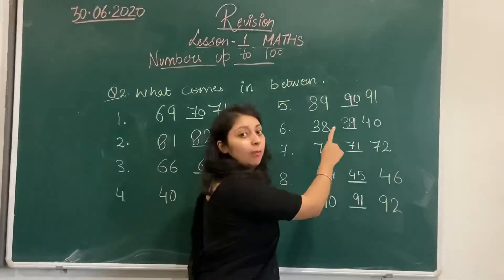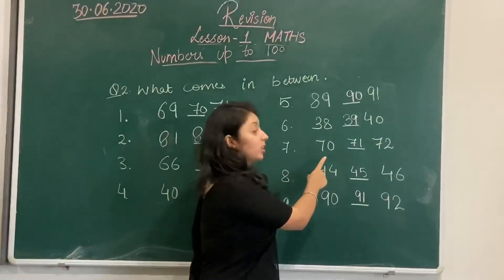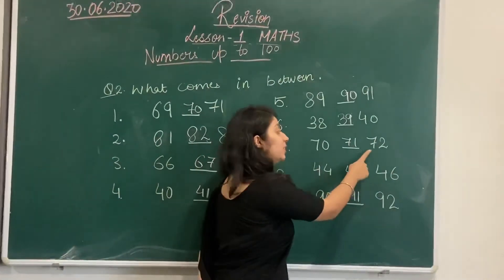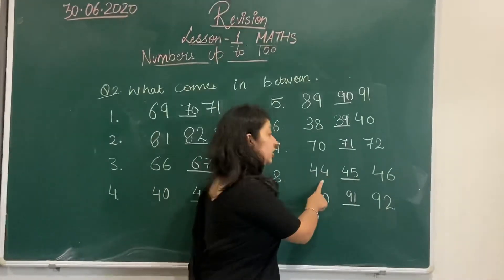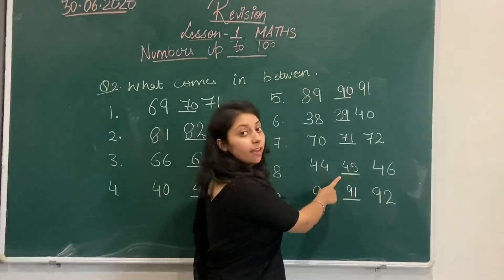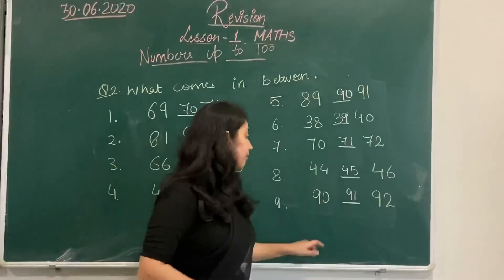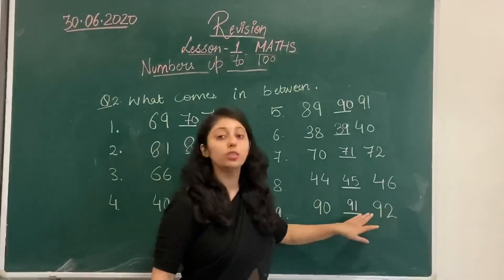What comes in between 70 and 72? 71. Next, 44, 46, which means 45. What comes in between 90 and 92? 91.